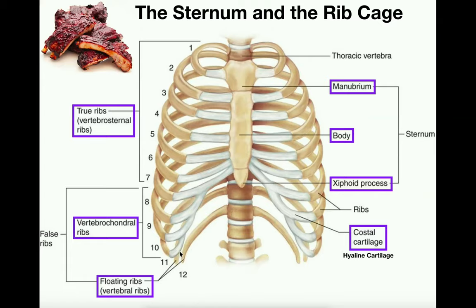Of the 12 pairs of ribs, the first seven starting at the top are referred to as vertebrosternal ribs. The 'sternal' refers to the fact that they each have a direct connection to some part of the sternum. For example, the first rib connects — via cartilage — directly to the manubrium. Ribs 2 through 7 each also have a direct connection to some part of the sternum.